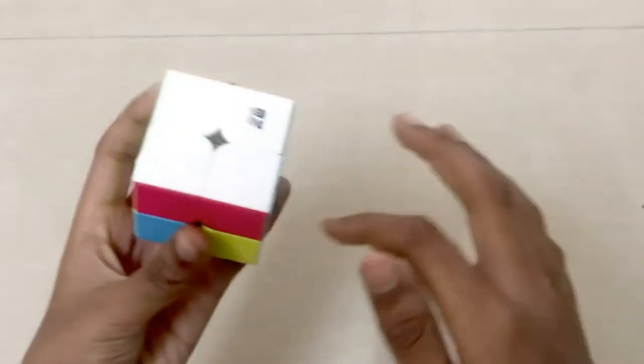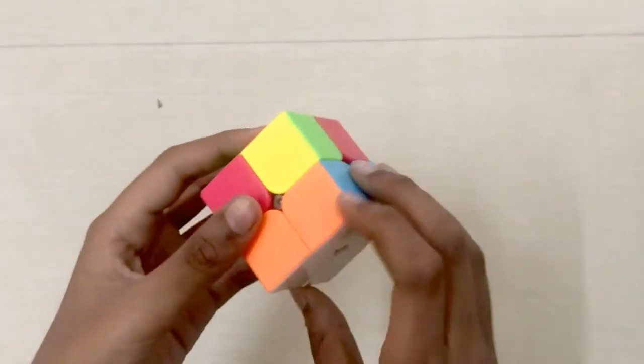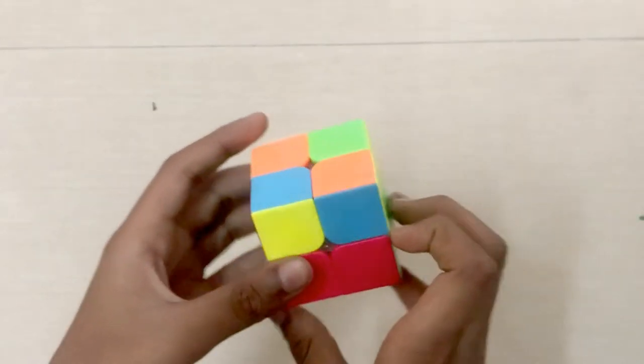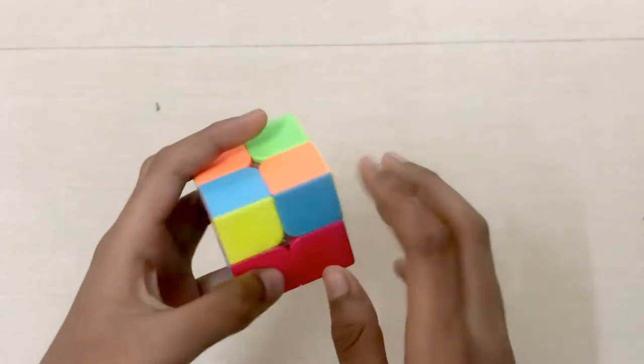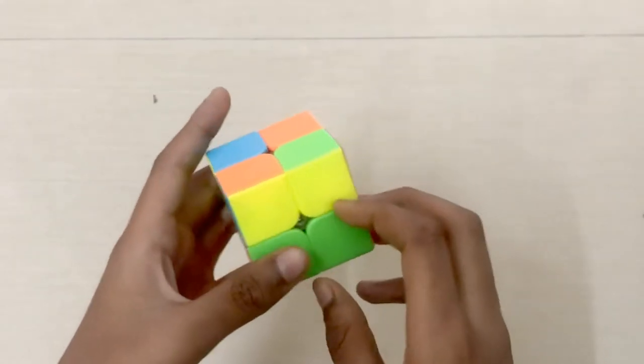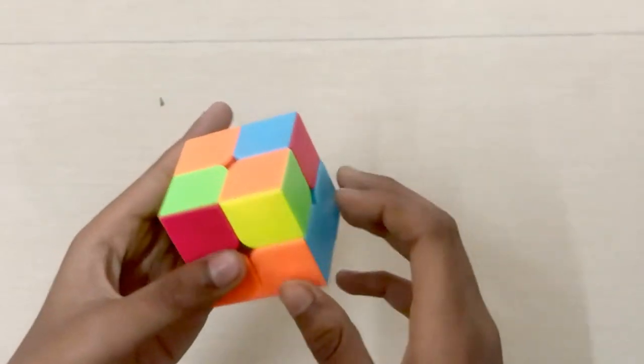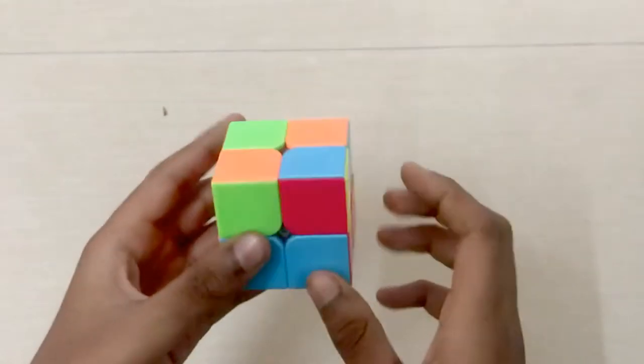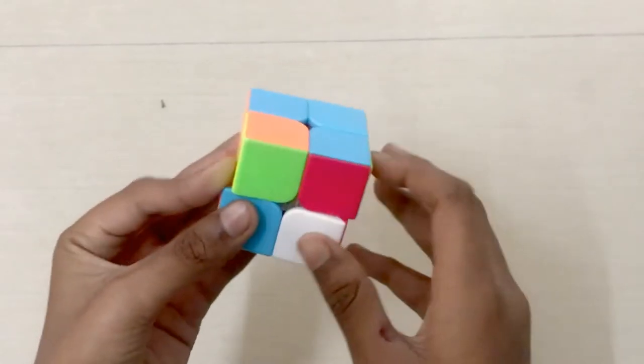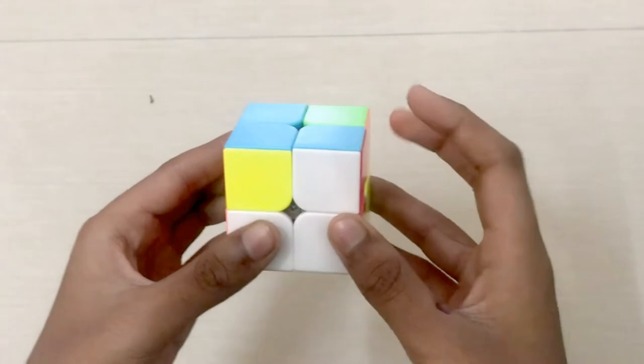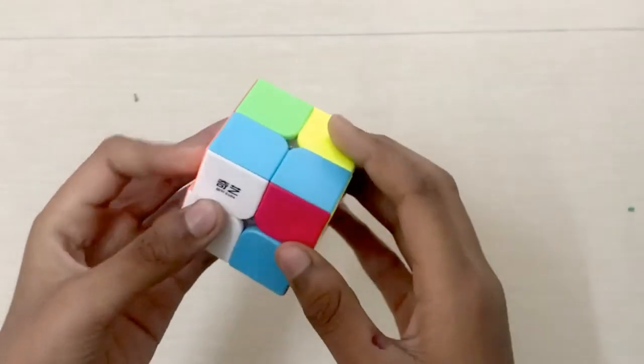Now the first layer is solved. We will move to the second layer. Next I will check if the pieces on the top layer match with the pieces on the bottom layer. There has to be one piece matching or all the four pieces should be matching.